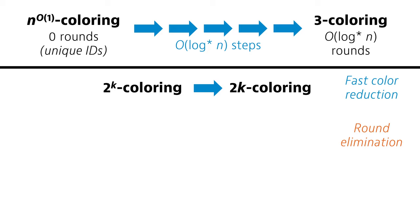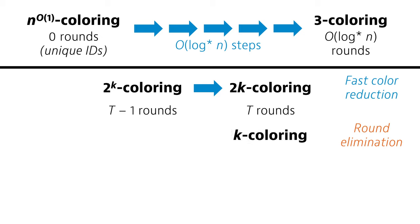In a sense, we will show almost the exact opposite of what we saw in the first week. In the first week we saw that if you can find a coloring with 2 to the power of k colors in t-1 rounds, then you can find a coloring with 2 times k colors in t rounds. Now, using round elimination, we can work backwards. We just lose a factor of 2 here. Basically, we show that if you can find a coloring with 2 to the power of k colors in t-1 rounds.